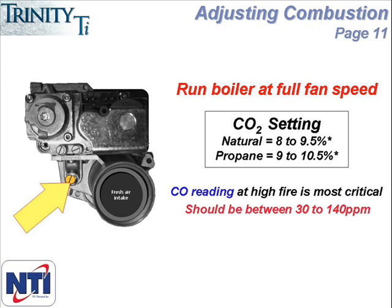Setting the CO2 should be done with the boiler running at high fire, which is a gas input value of 240. Perform a combustion analysis at high fire and read the CO2 level. Ideally you want the CO2 reading to be 9% when using natural gas and 10% for propane. If the reading is already there, no adjustment is necessary.